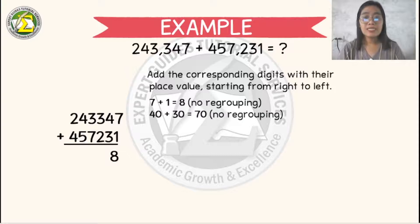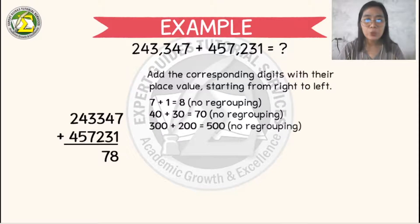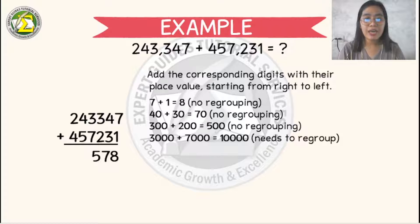In 1000s digit, we have 3 plus 7 will become 10. So we need to regroup. We put 0 at the bottom and 1 at the top. So in the 10,000s value, we have 4 plus 5 will become 9. Don't forget to add 1 to the result. So our answer will become 10.